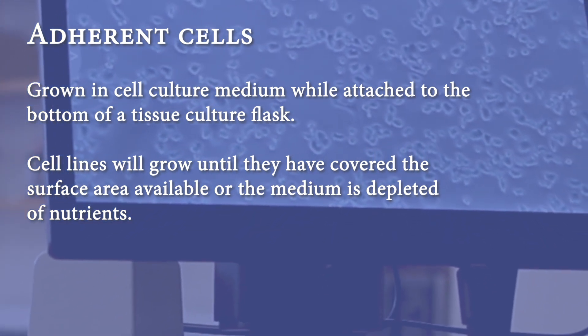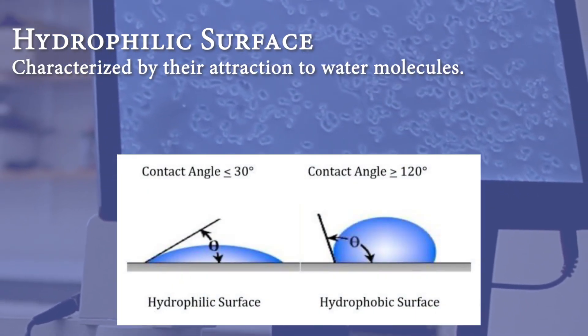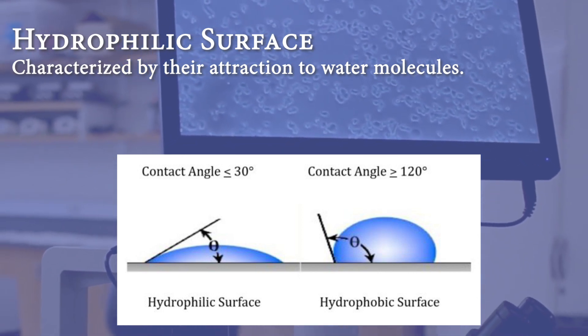To culture adherent cells like the PC12 cells, we need to use culture vessels treated with materials to generate a hydrophilic surface to which cells attach and grow.